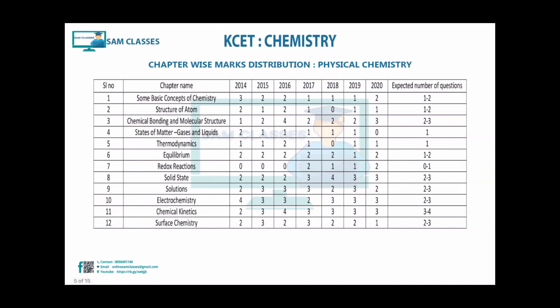Let's see the in-depth analysis. We have divided all the chapters into three parts: physical, inorganic, and organic. In physical chemistry, looking at 11th chapters - some basic concepts of chemistry have around one to two expected questions. Structure of atom: one to two. Chemical bonding and molecular structure: two to three. States of matter: one. Thermodynamics fluctuates - sometimes even nil. Equilibrium: around one to two.